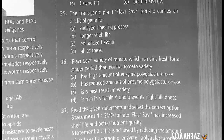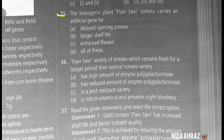The transgenic plant Flavr Savr tomato carries an artificial gene for delayed ripening process, longer shelf life, and enhanced flavor. The correct choice is option D: all of these.